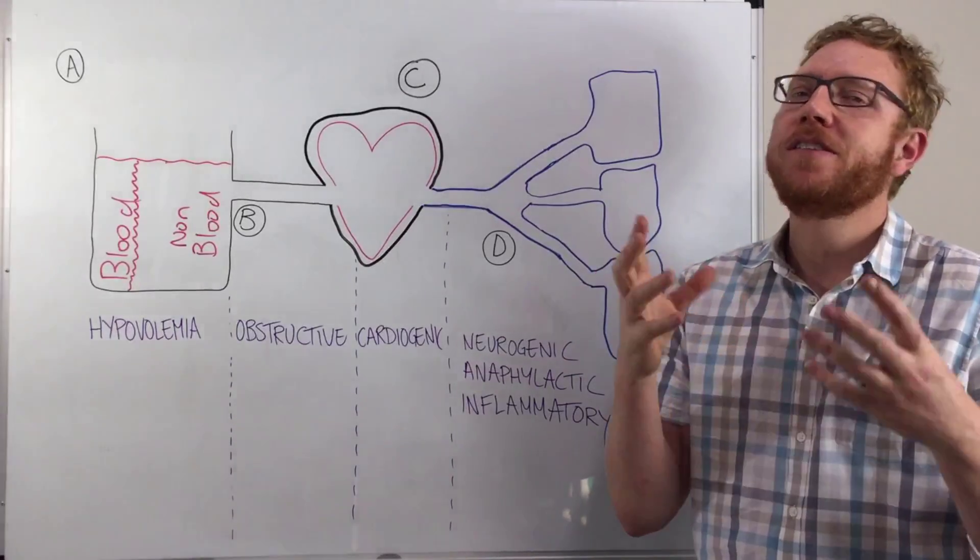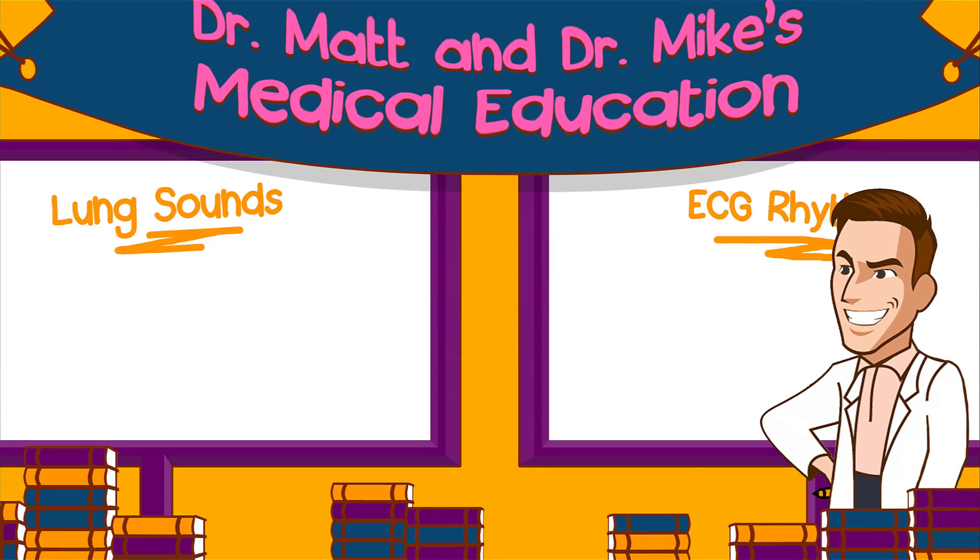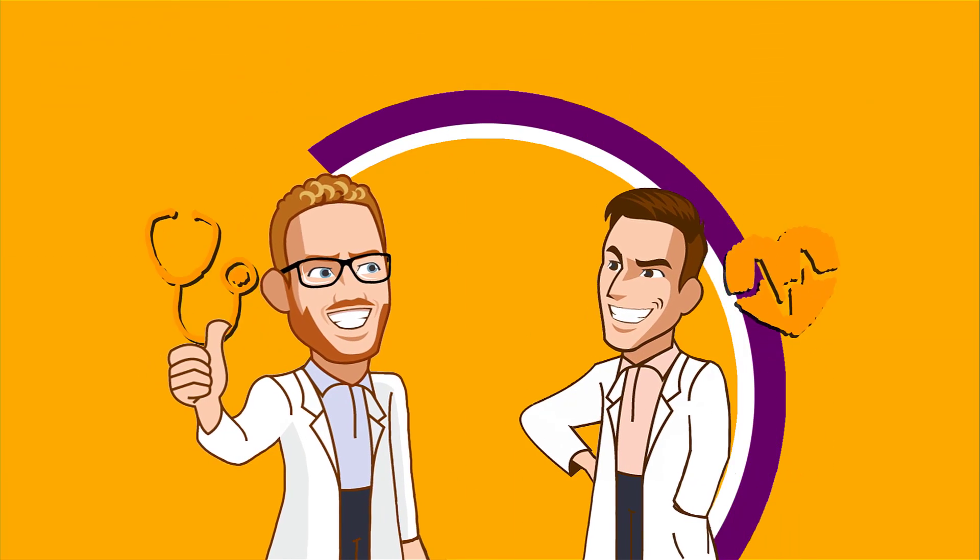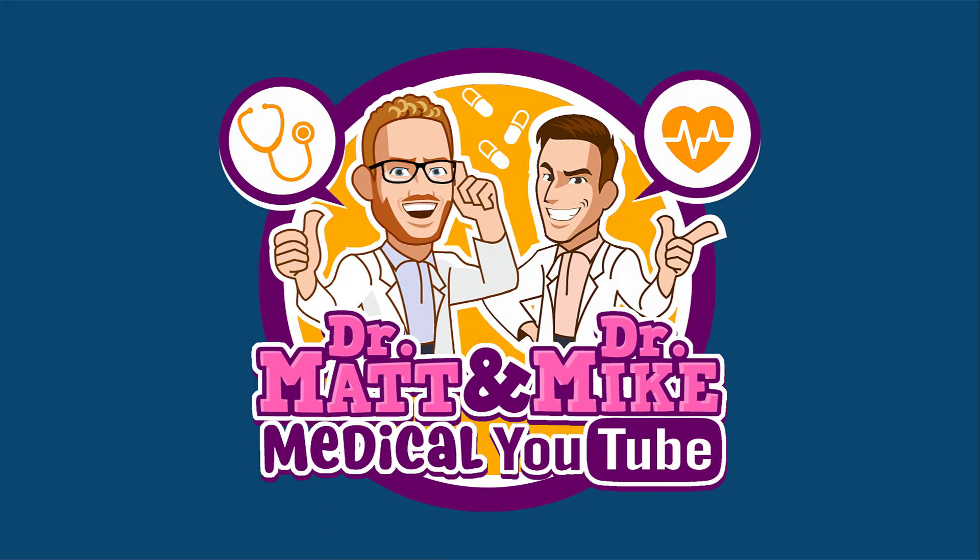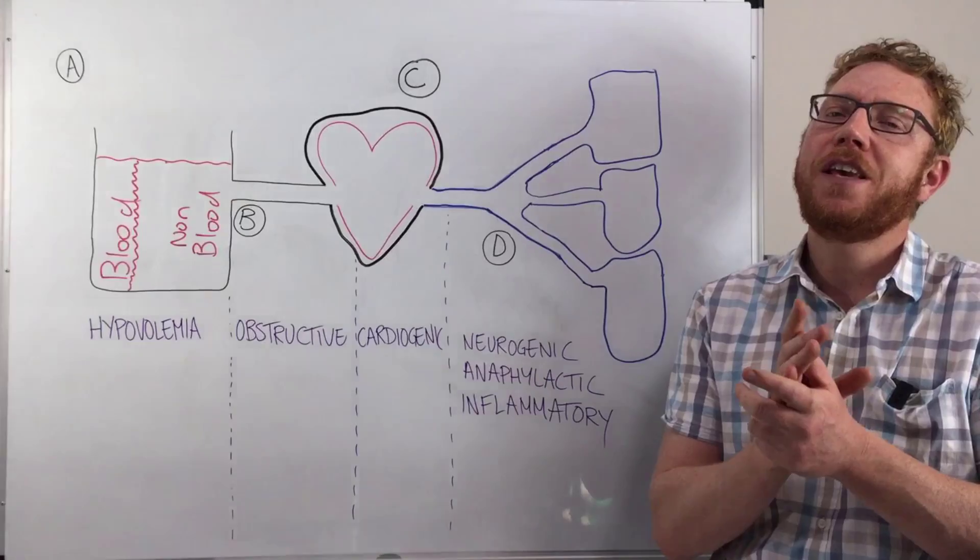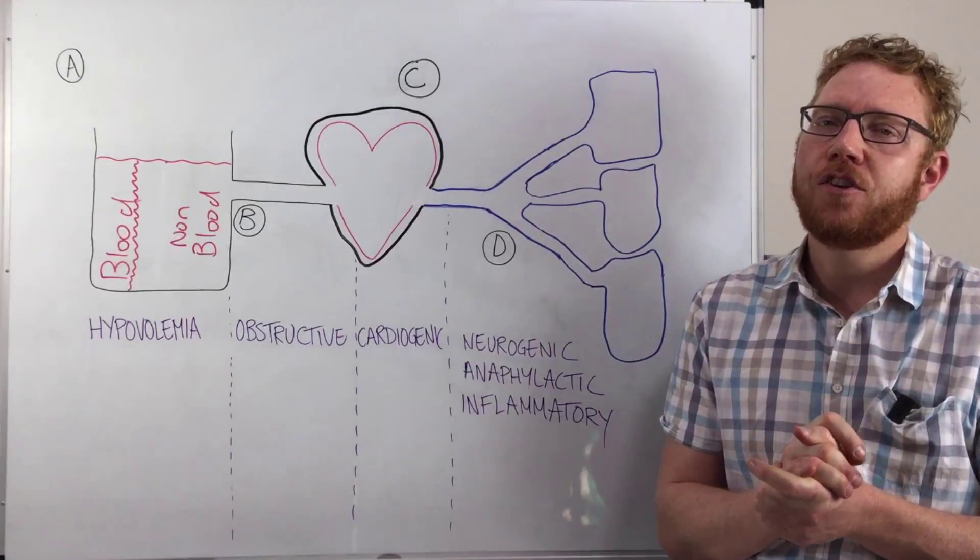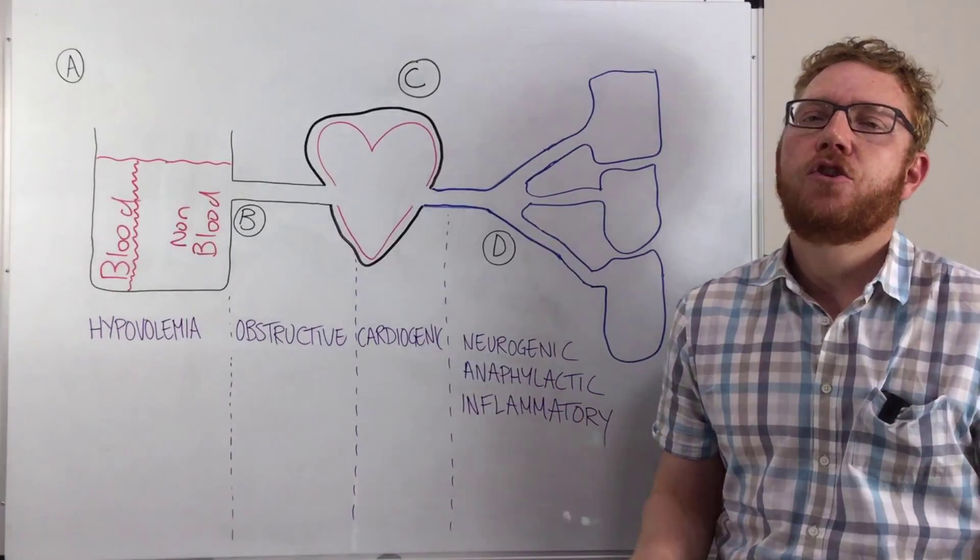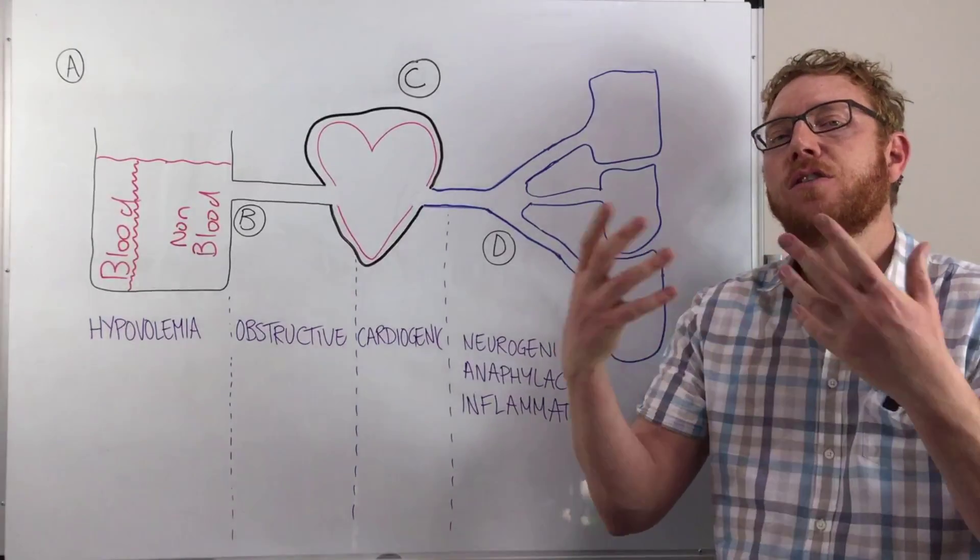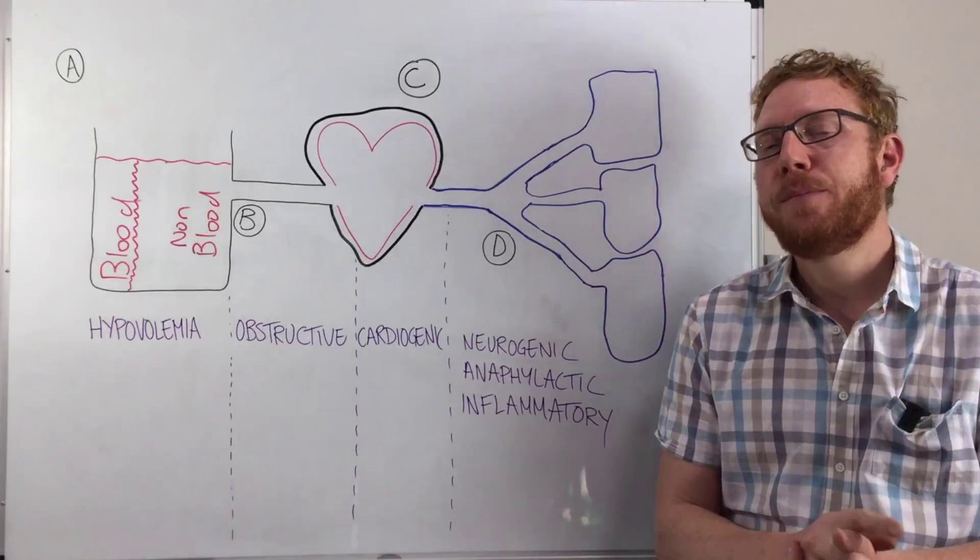Do you want an easier way to remember the different causes of shock? Watch this video to find out. So welcome to this short video on the causes of shock, and essentially what we're going to do here is categorize these causes into a way of easy memorization. So firstly, what is shock? Shock is essentially a clinical syndrome where there is inadequate perfusion and therefore oxygenation of tissues in the body. Therefore, we can't perform metabolic functions.